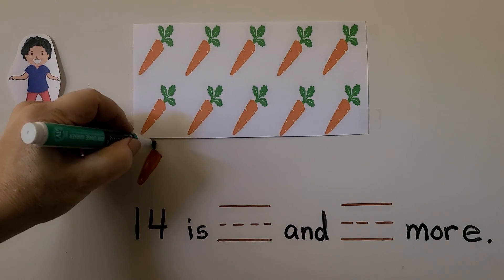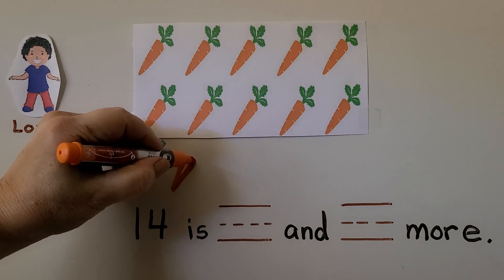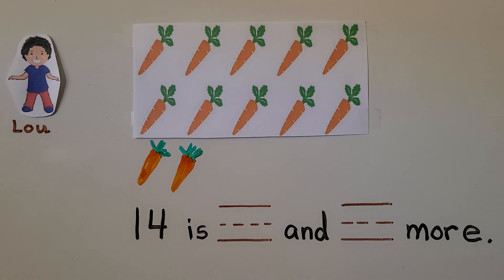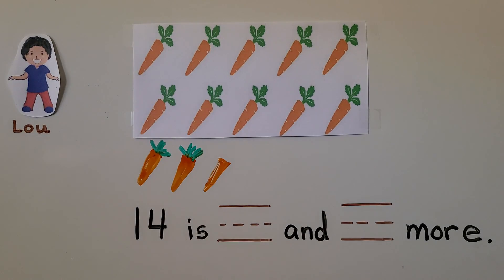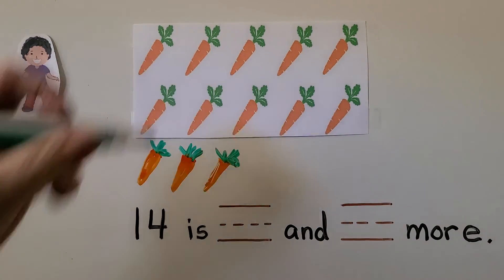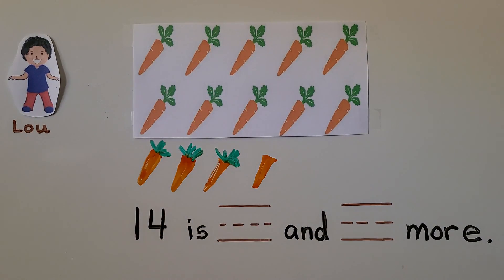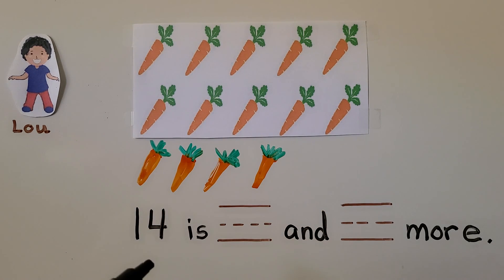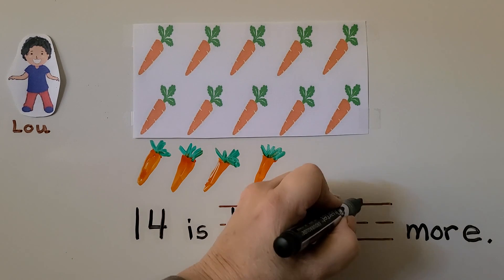11. We can put some leaves on it. 12. We can put some leaves on that one. 13. And 14. We need to draw 4 more. There are 10, 11, 12, 13, 14. 14 is 10 and 4 more.